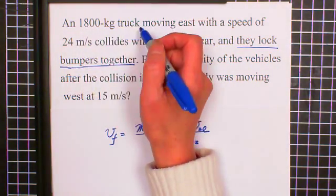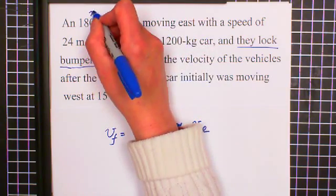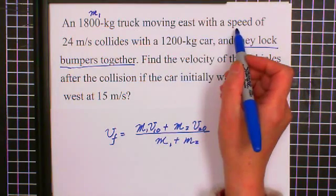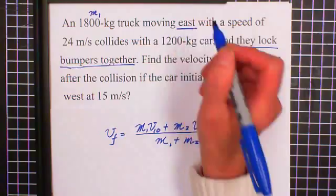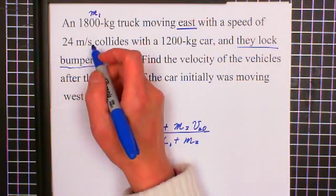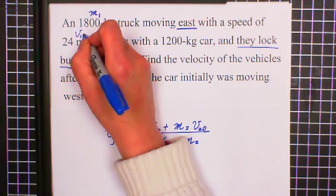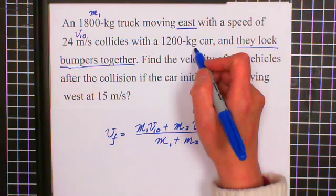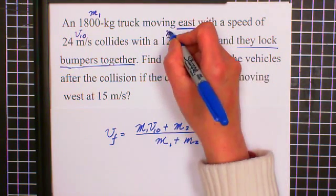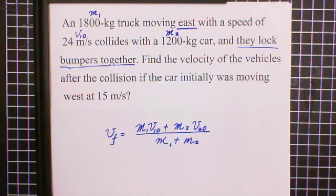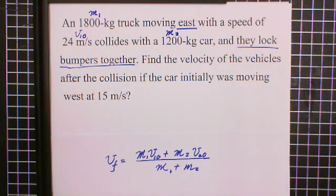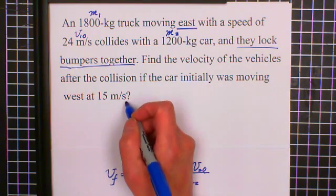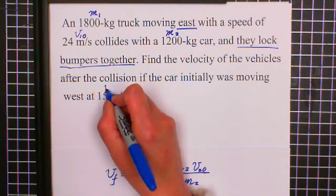1800 kilogram truck, we give it, this is the M1. And initially moving east with a speed of 24 meter per second, so this is the V1 initial. And initially, the car is moving west at 15 meter per second. This is the V2 initial.